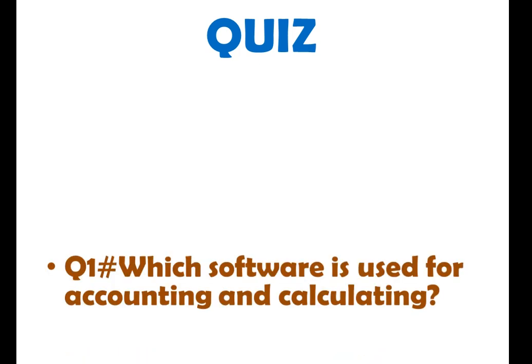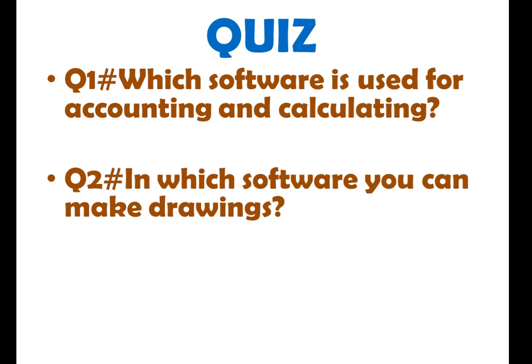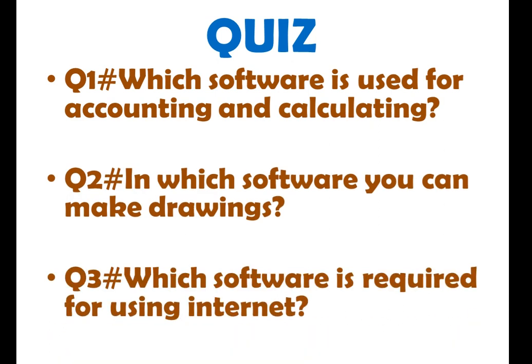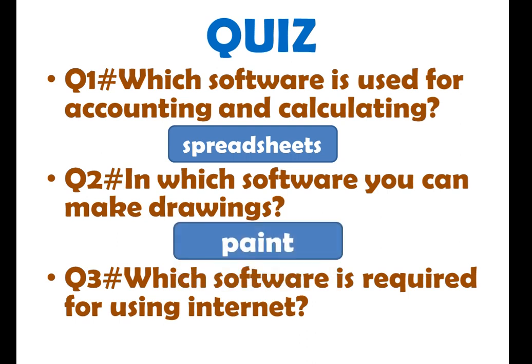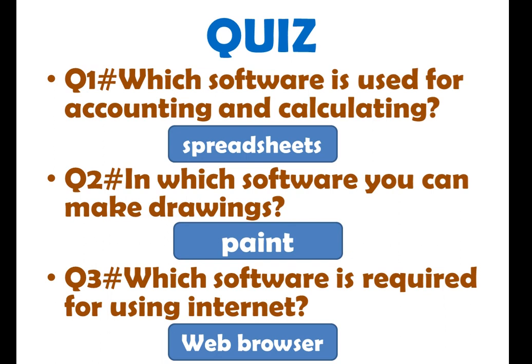Now it's quiz time. Are you ready for the quiz? I'm going to ask questions. My first question is: which software is used for accounting and calculating? Very good — spreadsheets. My second question is: in which software can you make drawings? Very good — Paint. My third question is: which software is required for using the internet? Very good — web browser.